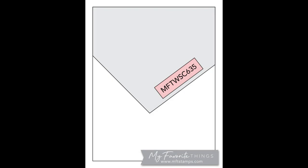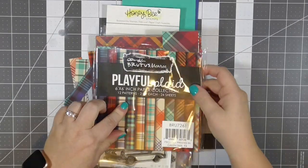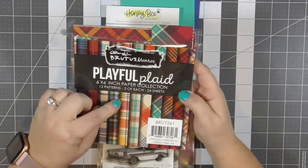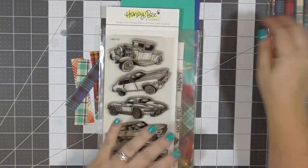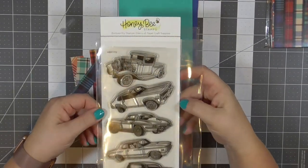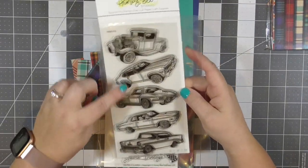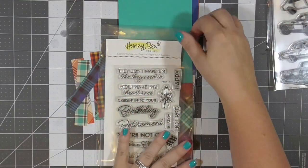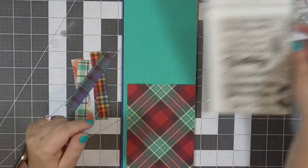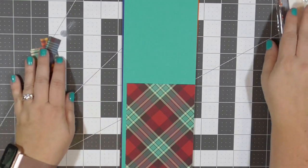This is the My Favorite Things card sketch number 635. It's a very simple card sketch that could be as elaborate as you wanted it to be. I'm going to work with this Brutus Monroe Playful Plaid paper pad. I've selected the Honey Bee Stamps Car Show stamp set. There are five cars so I will be making five cards and I'm using the coordinating Yorah Classic Sentiment stamp set.